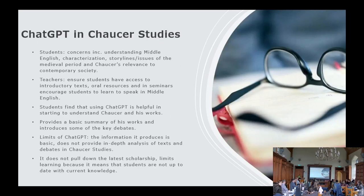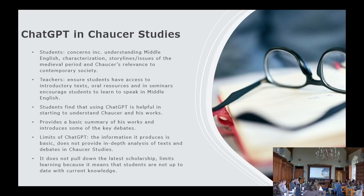So empirically, what does this mean? Looking at ChatGPT in Chaucer Studies, our empirical research shows that students are concerned about learning — learning is difficult. Their concerns included understanding Middle English, characterisation within Chaucer's tales, the storylines, and the issues of the medieval period. That historical imagination is something difficult for some English students, as is understanding Chaucer's relevance to contemporary society — how do you move from understanding that medieval way of writing and expression and see its relevance in the contemporary period?